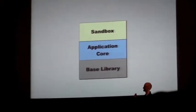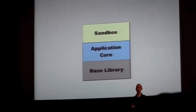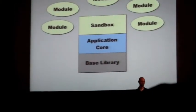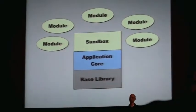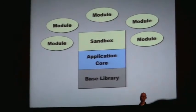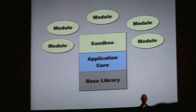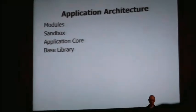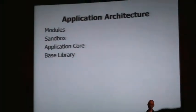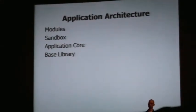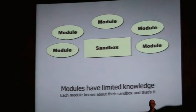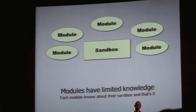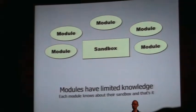The sandbox sits on top of the application core. It says, I am the gatekeeper between what's possible on the page and what you're allowed to do. Any number of modules hover around that — it doesn't matter if you have one or twenty. The four parts of this architecture are: the modules themselves, the sandbox, the core, and the base library. The modules are actually really dumb — they don't know much about the page or the framework itself, only about the sandbox.